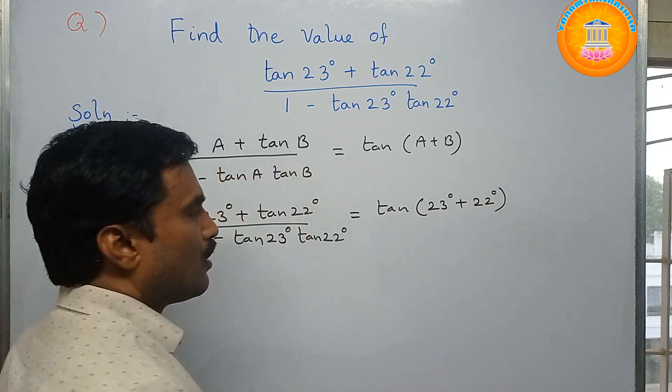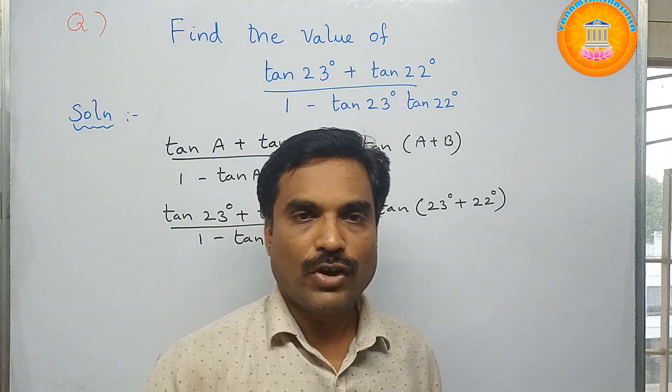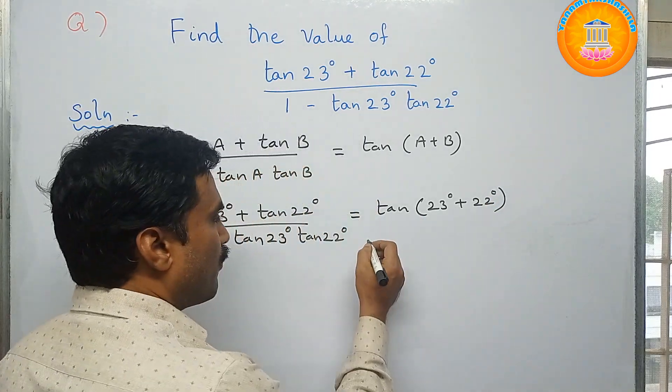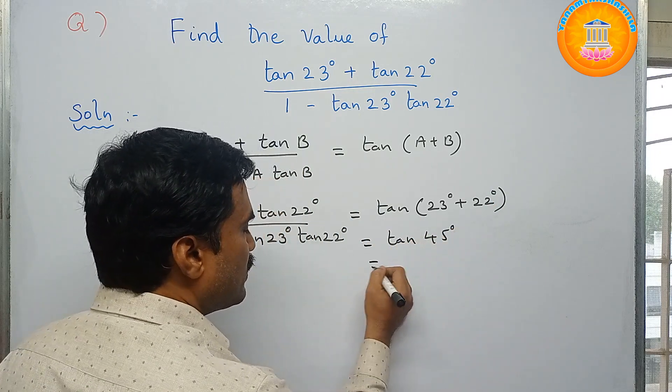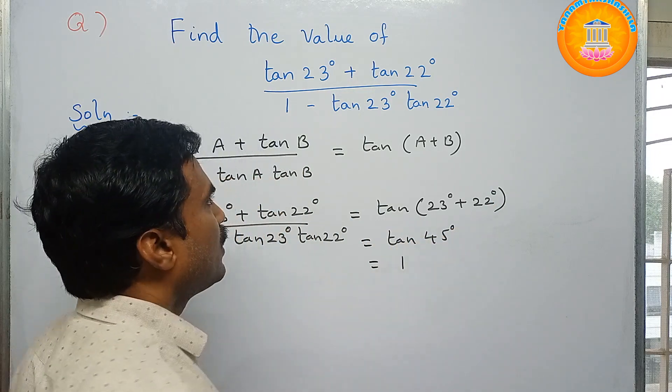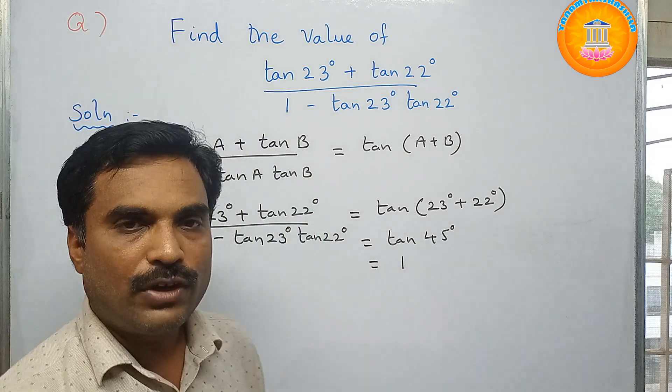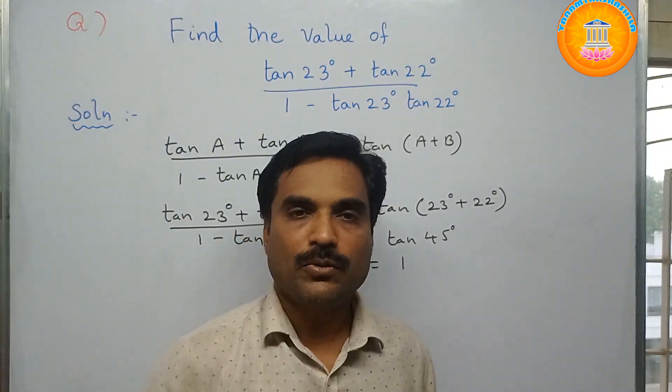Now add this, 23 plus 22, that is nothing but 45. So tan 45 degrees. So what is the value of tan 45 degrees? That value is 1. Therefore, the value of tan 23 plus tan 22 by 1 minus tan 23 tan 22 equals 1.